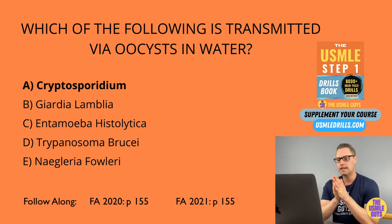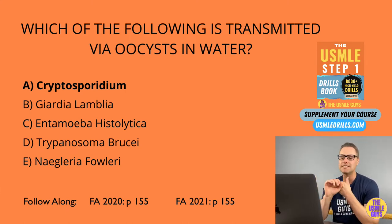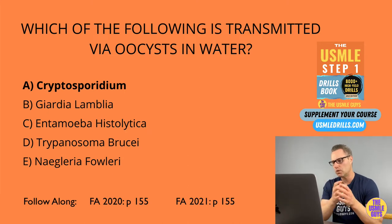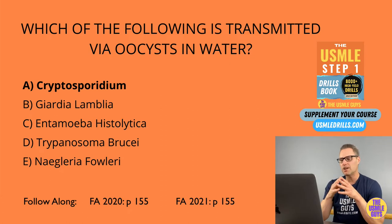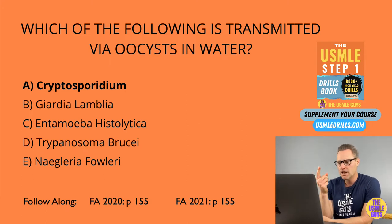Next up, we have Entamoeba histolytica. This is responsible for causing amebiasis, characterized by bloody diarrhea, right upper quadrant abdominal pain, as well as liver abscess formation. Just as with Giardia, it is transmitted via cysts in the water. If you look at the cysts in the stool, you can see up to four nuclei, and one unique diagnostic feature is the presence of engulfed red blood cells. We treat this with metronidazole, but if the patient is not symptomatic, we can use other drugs like iodoquinol or paromomycin.